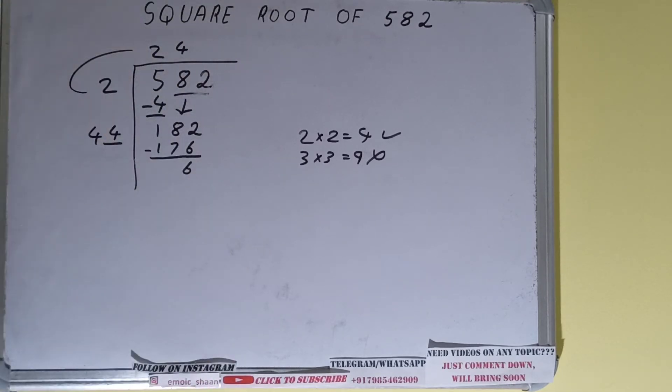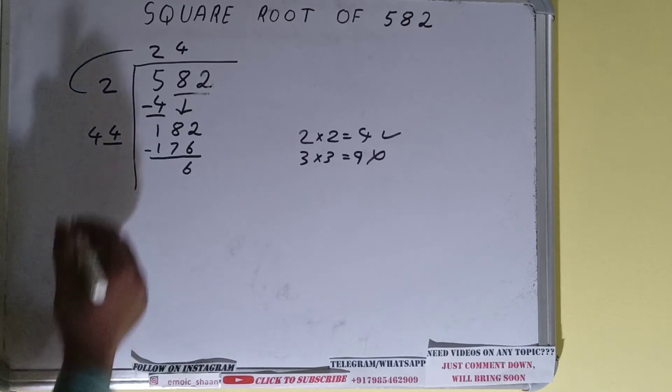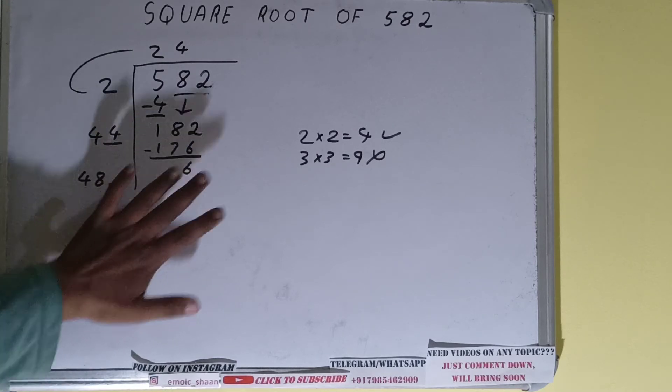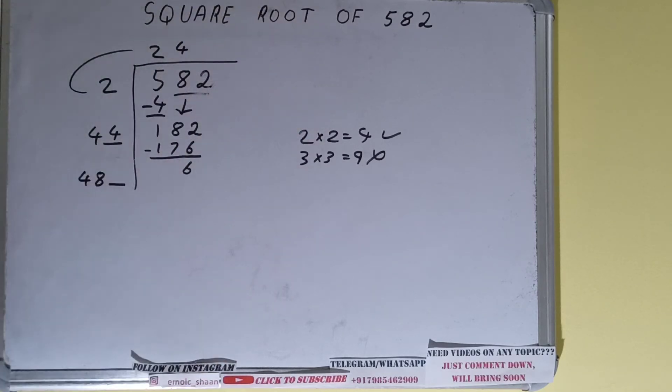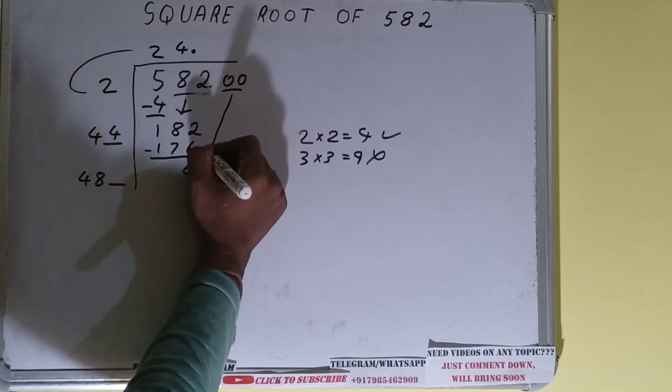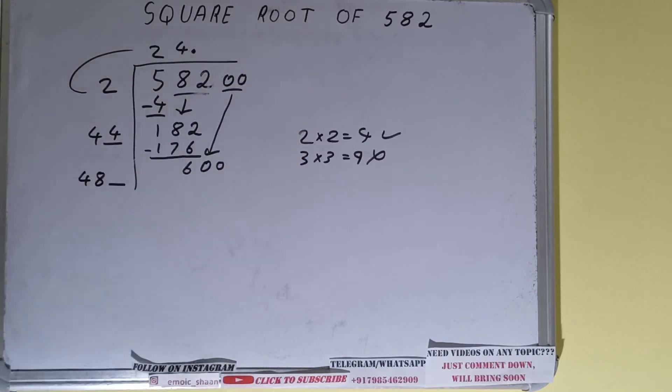Now 44 times 4 we did. Add both: 44 plus 4 will be 48 and 1 digit extra to make this number big. But we don't have any more pairs, so we'll put a decimal. Once we put the decimal we can bring down a pair of zeros and the number becomes 600.